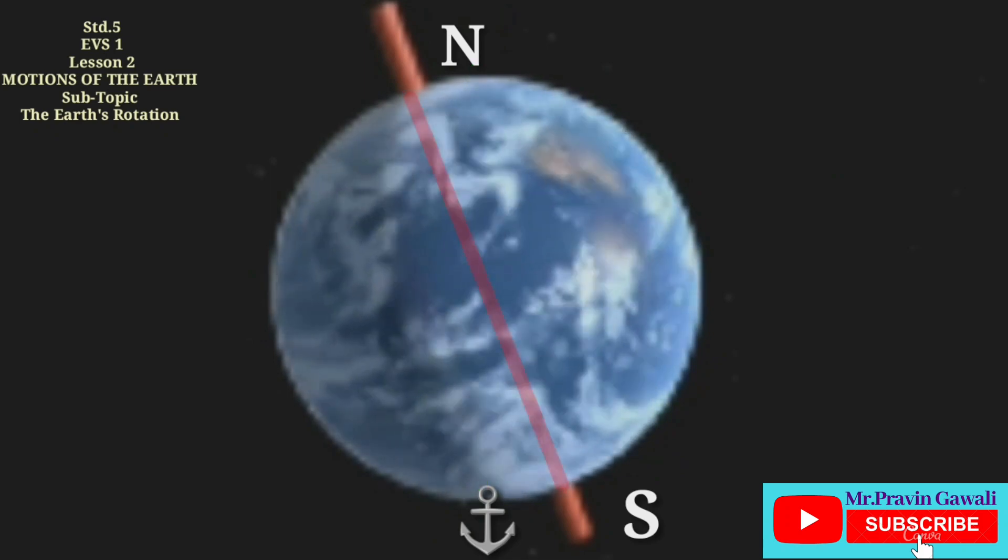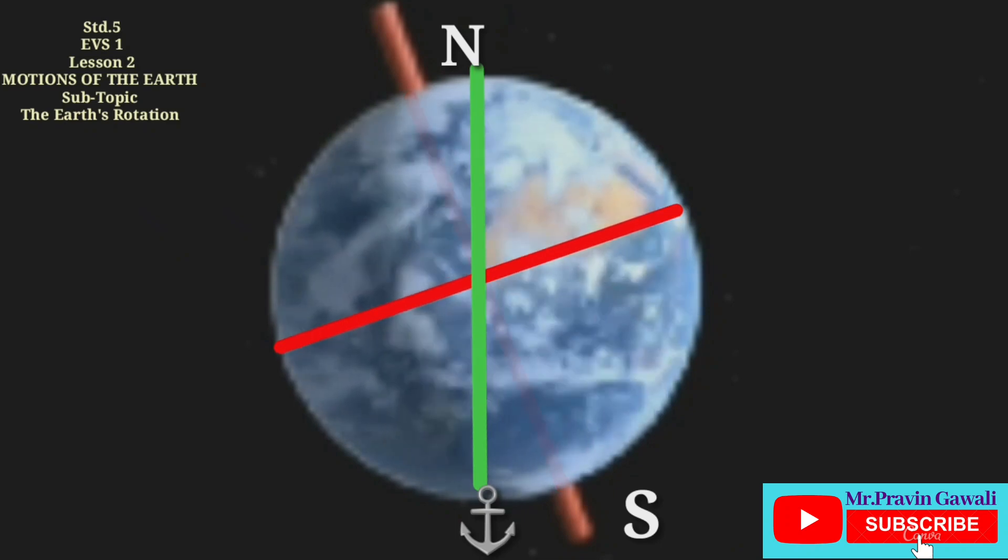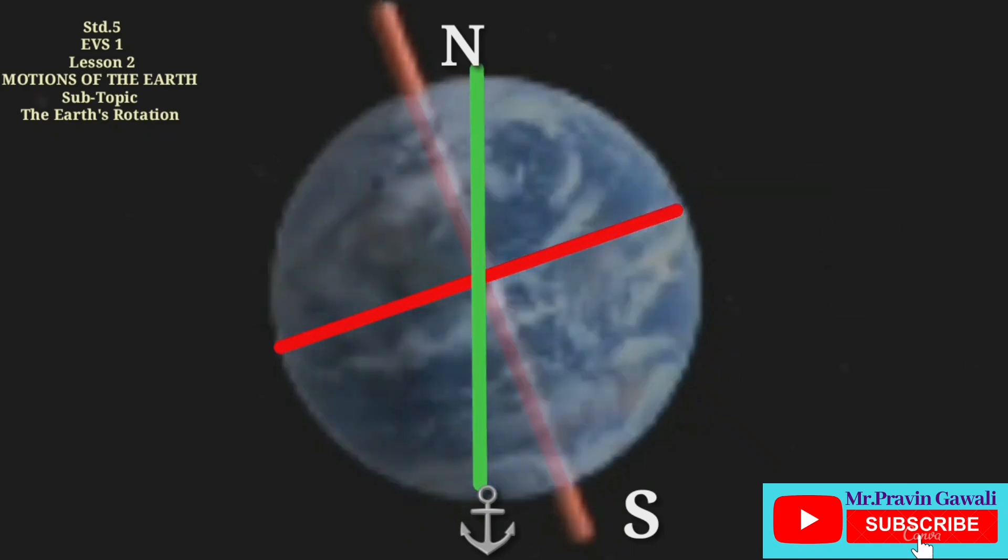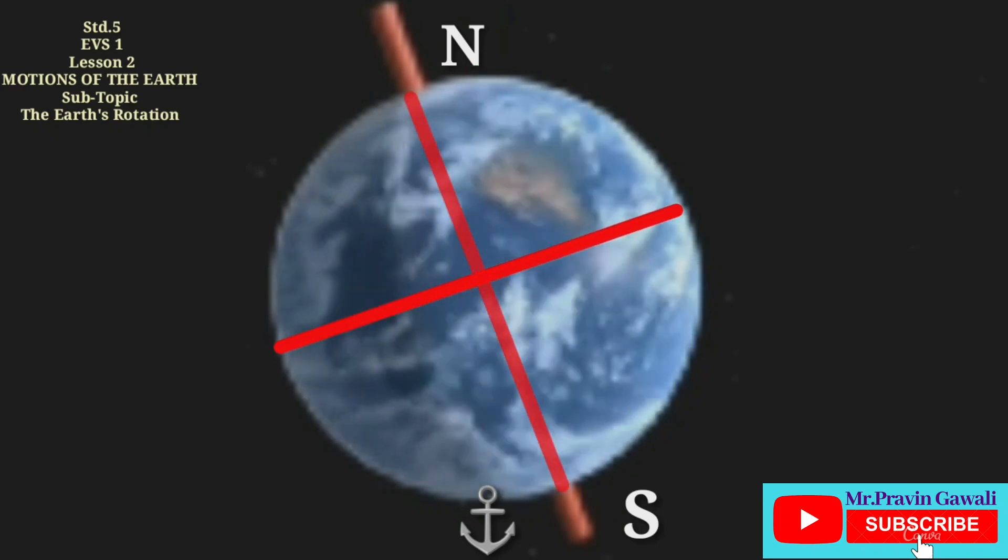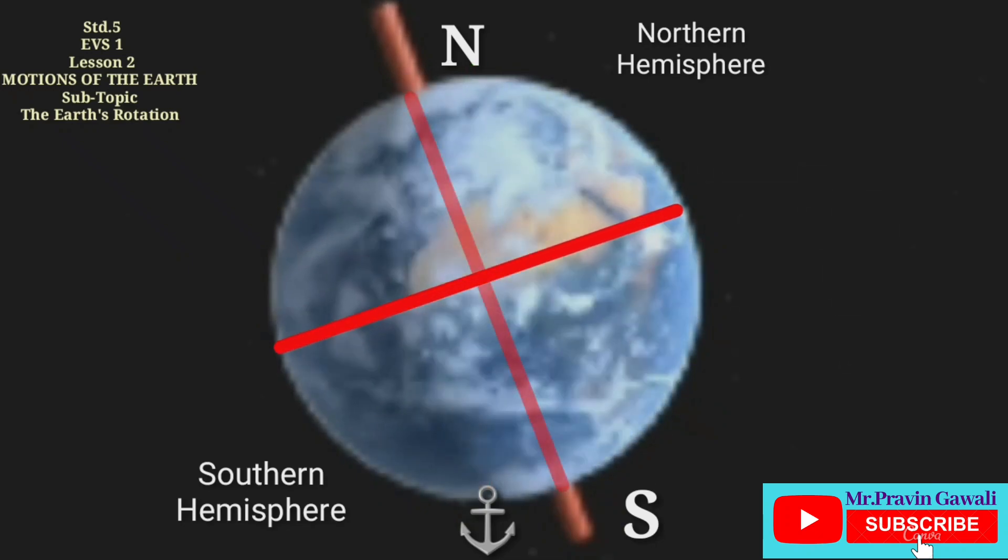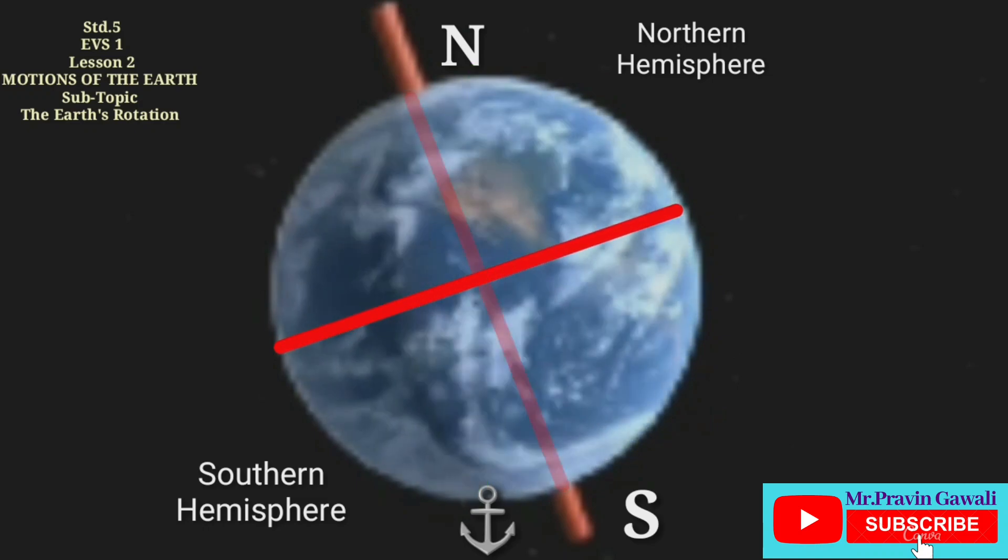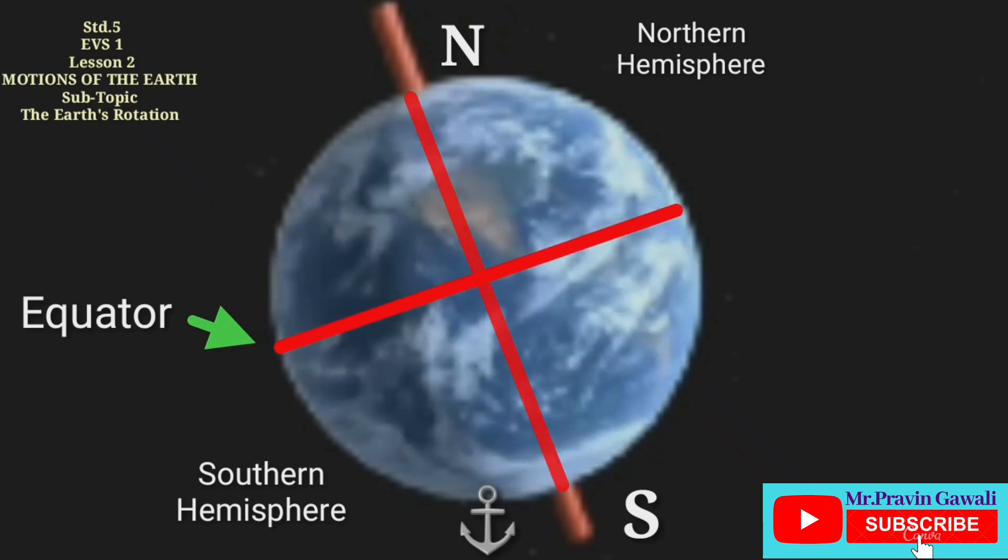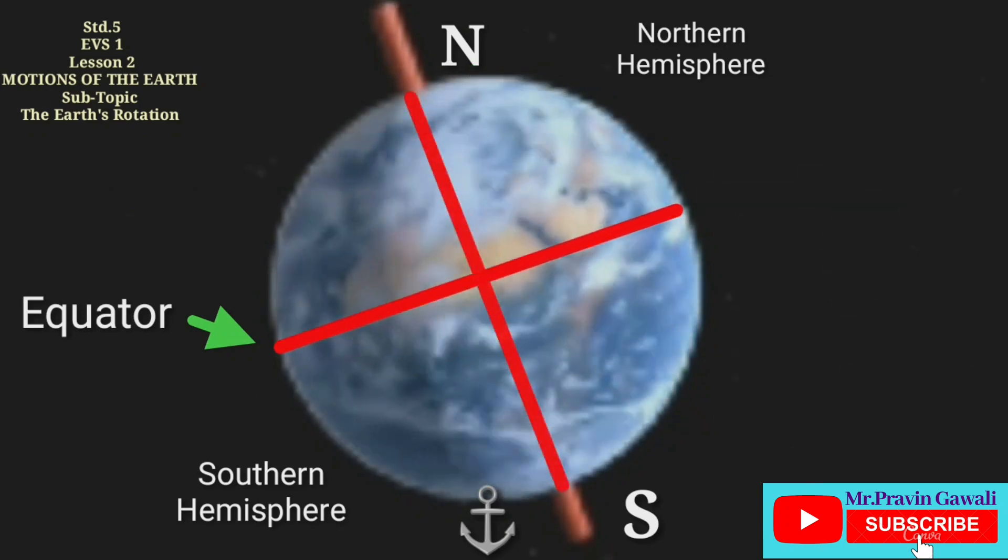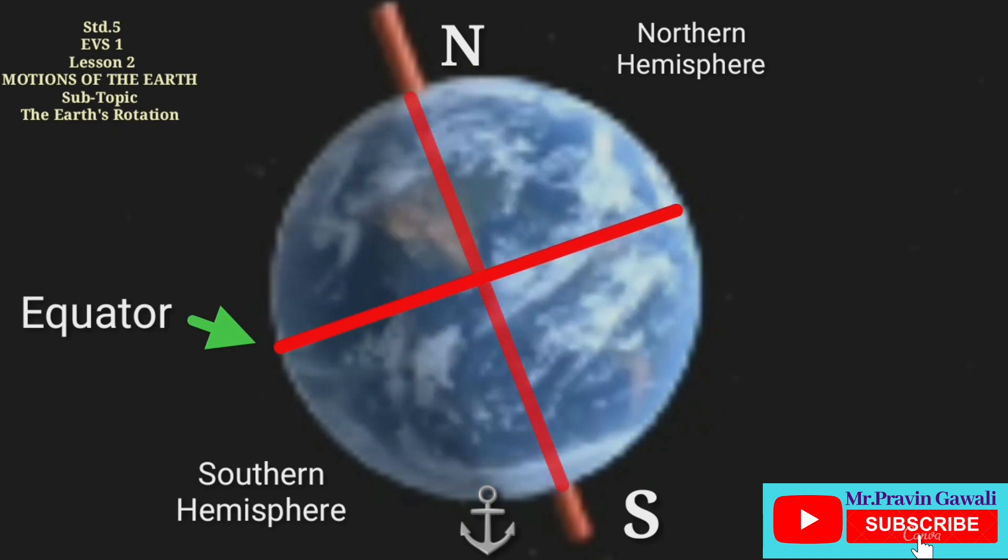If we draw a line or a circle exactly in between the North and South Pole, the Earth will be divided into two equal parts. These two parts are called Northern Hemisphere and Southern Hemisphere. The upper part is Northern Hemisphere, the lower part is Southern Hemisphere. The line which bisects the Earth into two equal parts is known as the equator. It is also an imaginary line.